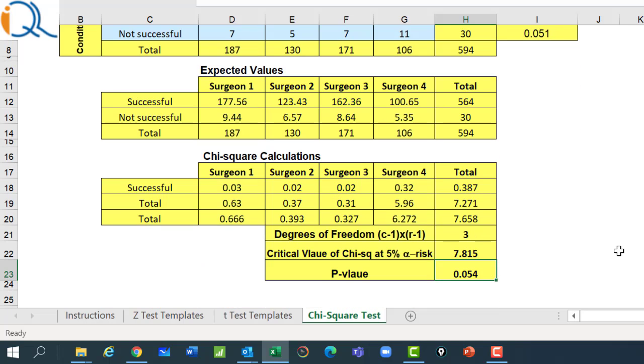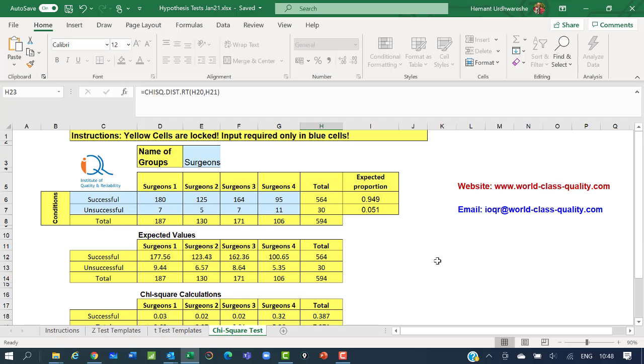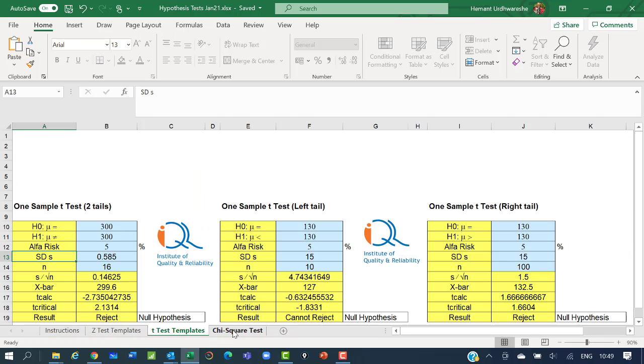So, the conclusion is same. You can note that the largest chi-square contribution is from Surgeon 4. So, Surgeon 4 is the one having largest difference compared to the other Surgeons. You can conclude like that. Of course, this table at the moment is limited to 4 columns and 2 rows, but we may be adding more tables to this template later on. You can also see templates of Z-test and T-test in the other worksheets.